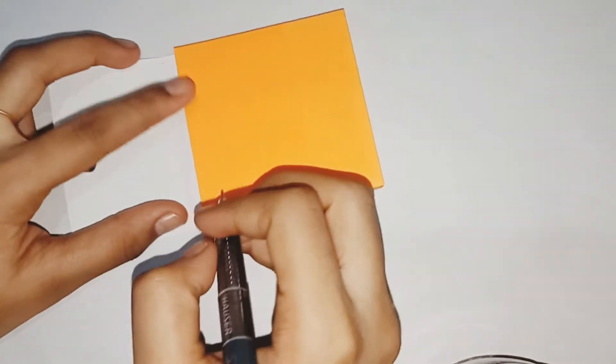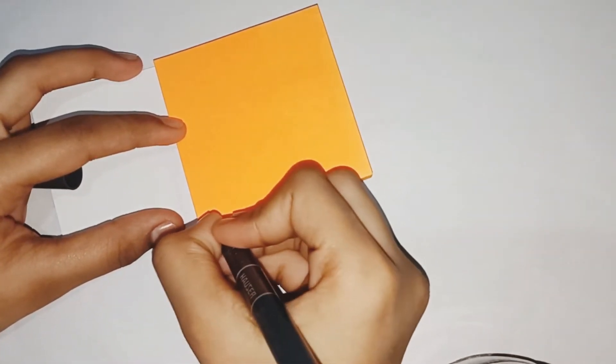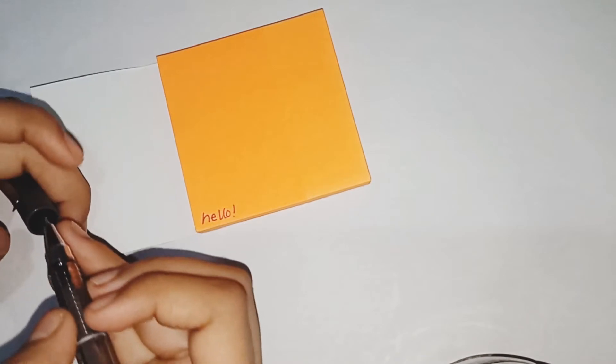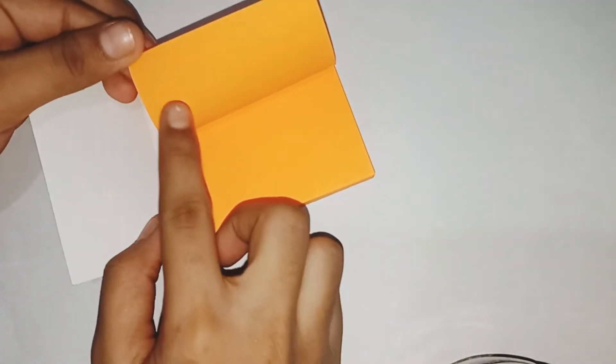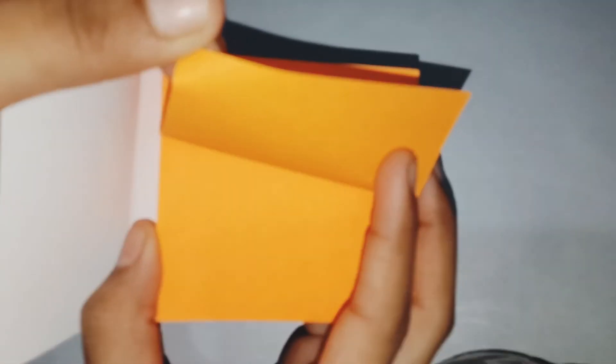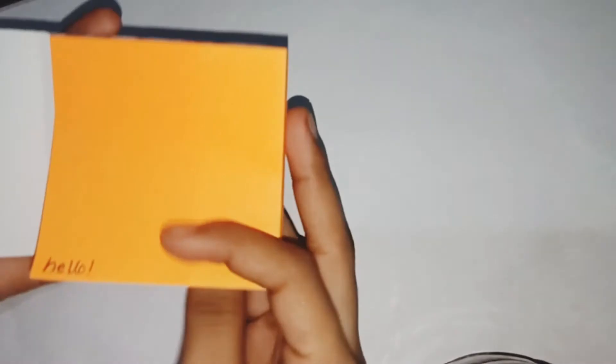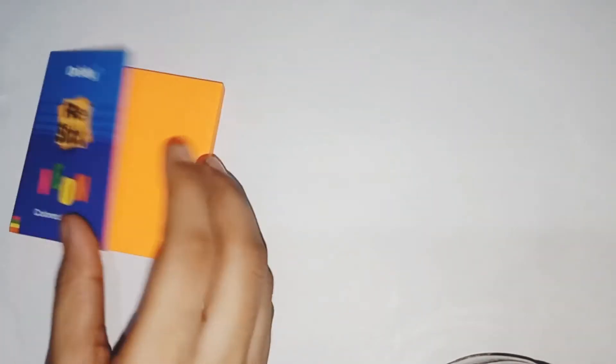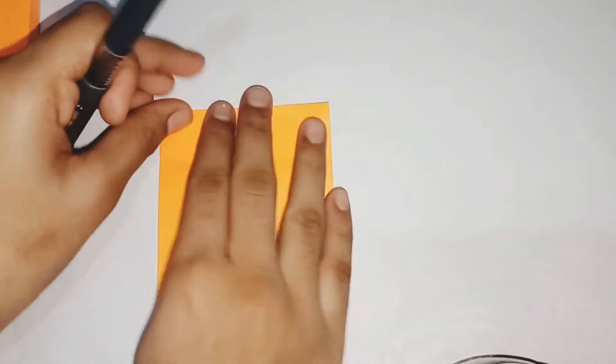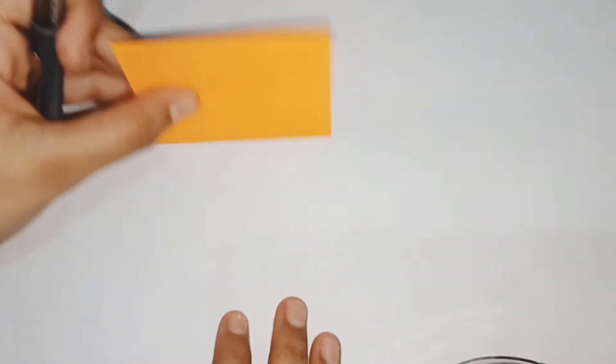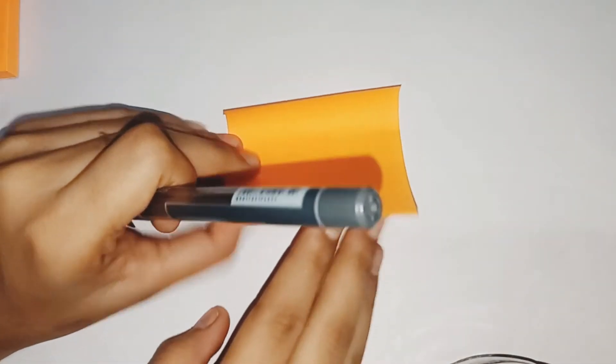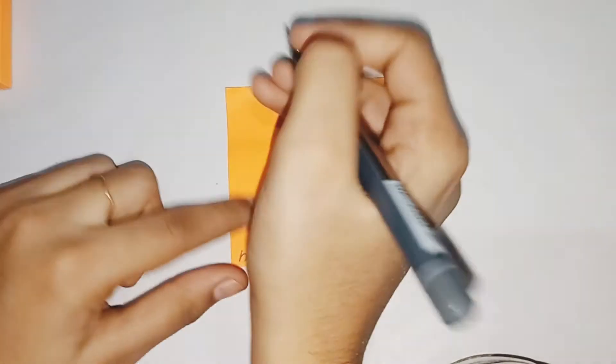Now we'll be judging the sticky notes on certain criteria. First, let's see if whatever we write shows through the back of the paper, which would be quite irritating. But no, it doesn't! Now let's test the re-stickable quality. Yeah, it's stuck on my table, that's amazing, and it can be re-stuck again and again. But I suppose the glue will wear off if we stick it repeatedly.